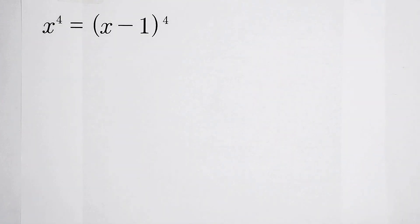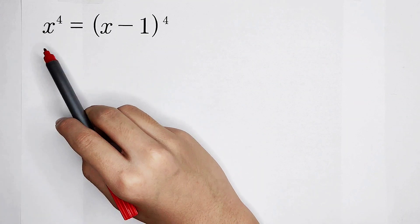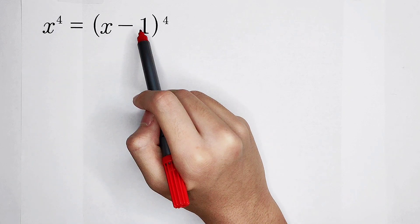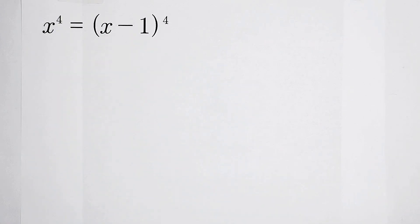Welcome back to Math We Know. Solve this equation about x: x to the power of 4 is equal to x minus 1 to the power of 4. How should we solve it?